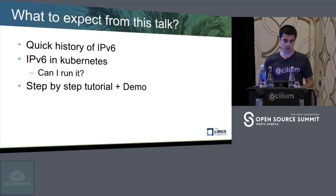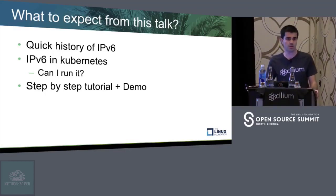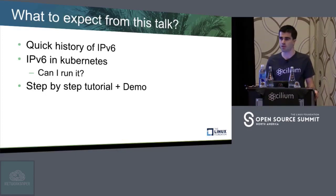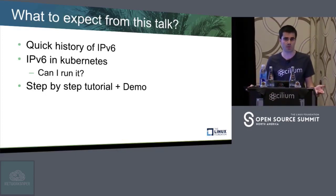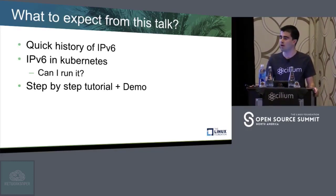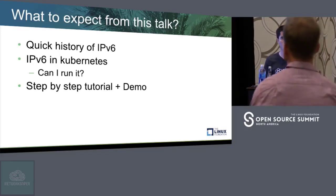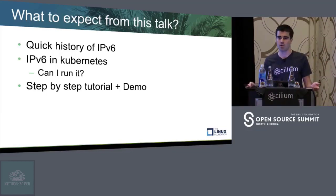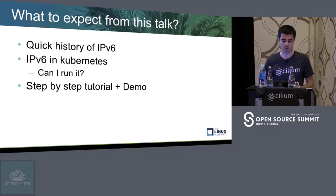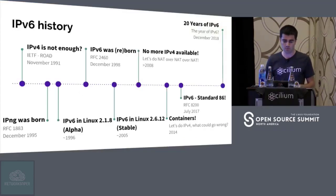So what should you expect from this talk? I'm going to give a really quick history about IPv6, and then I'll talk about IPv6 in Kubernetes itself — if it can run it or not. And while I'm doing that, I'll also do a step-by-step tutorial to talk about each component in Kubernetes and what you need to change or not in each option.